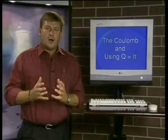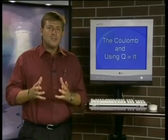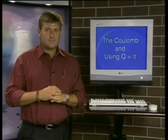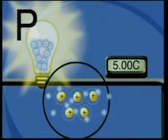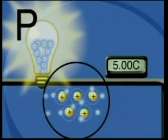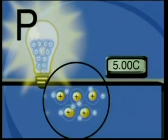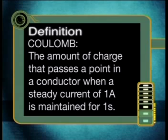We know that q stands for charge and we measure charge in coulombs. We also know that current is the rate of flow of charge. The flow of charge arises due to the movement of electrons between atoms. Electrons are very, very small particles, so in physics we take an enormous number of these particles and group them together as one unit — we call this unit a coulomb. One coulomb of charge is the amount of charge that passes a point in a conductor when a steady current of one ampere is maintained for one second.